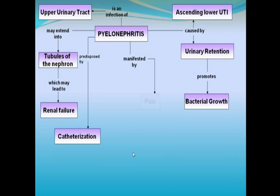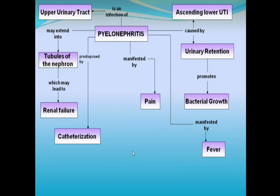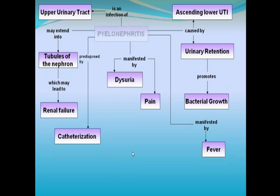Acute pyelonephritis is described as a clinical syndrome presenting with bacteriuria accompanied by flank pain at the costovertebral angle, fever, and chills. Conversely, chronic pyelonephritis may have a deceptively quiet presentation of frequency, dysuria, and nocturia.